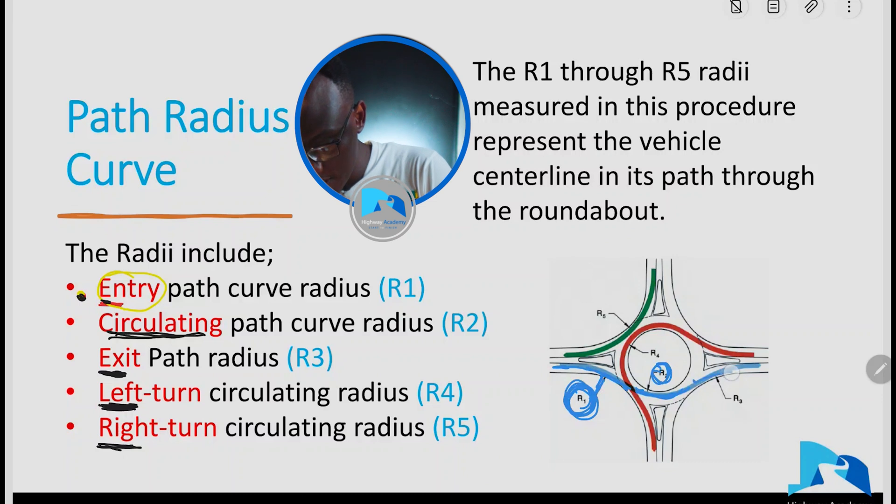R3 is the exit. You shall find that R1, R2, and R3 are on one same constant curve. So as you're entering the roundabout, that's R1, which is the entry path curve radius. As you circulate around the roundabout, that's R2, the circulating path radius. And as you exit the roundabout, that's R3, which is the exit path radius.